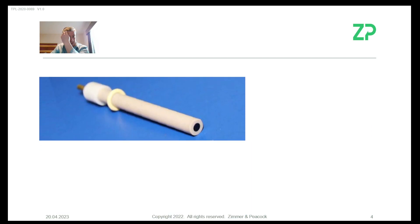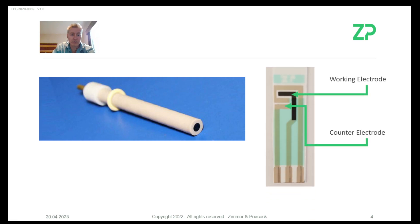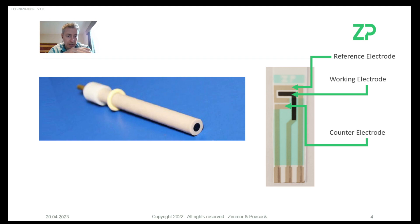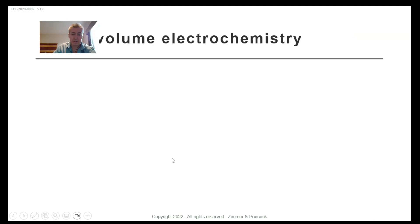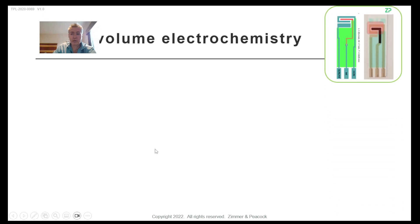It's quite elegant the way that everything is on the same substrate. These screen printed electrodes cost less than 50 euro cents each — less than 50 US cents, less than 50 UK pence, less than 50 European euros. So this is a very cost-effective solution.